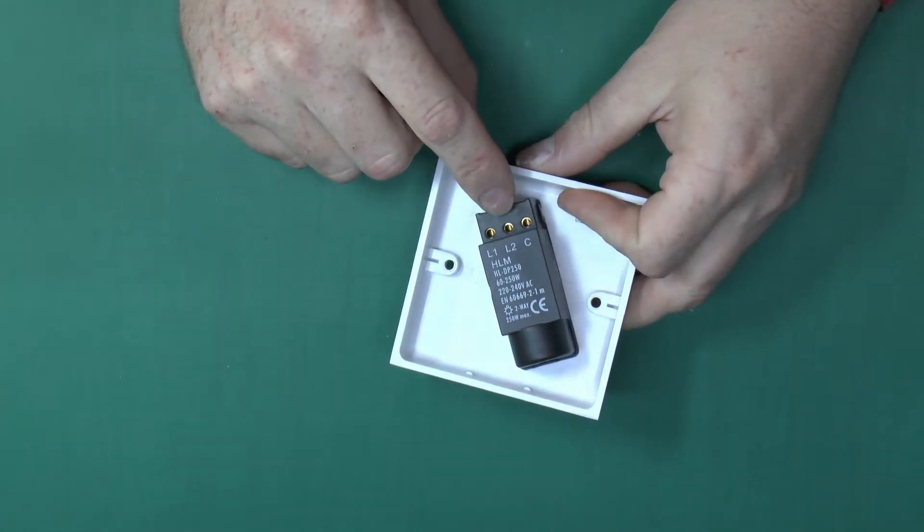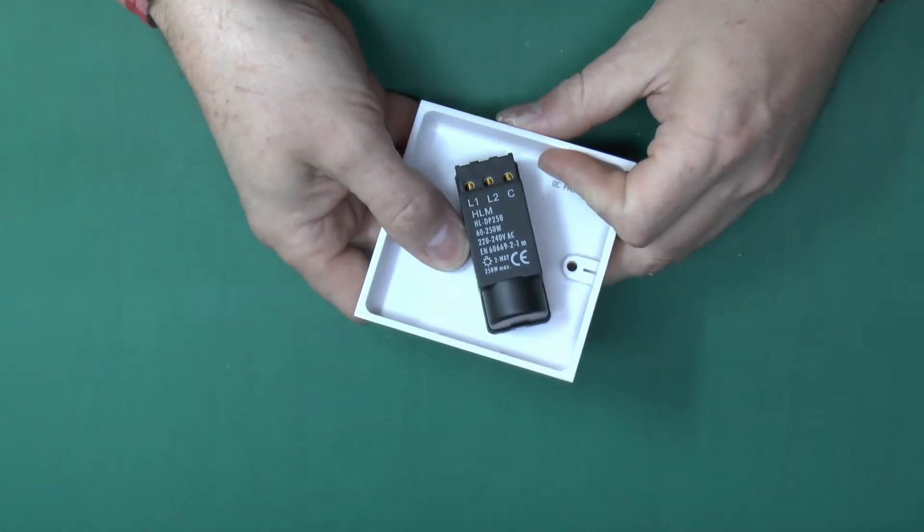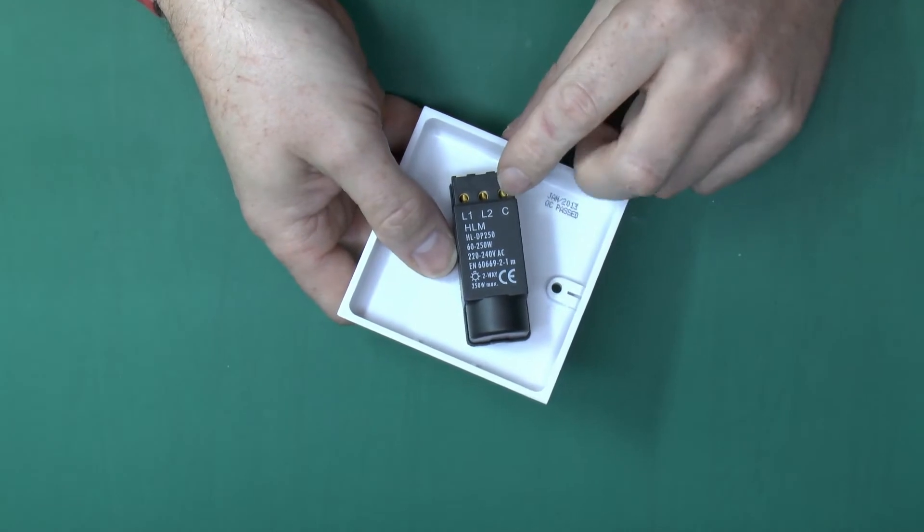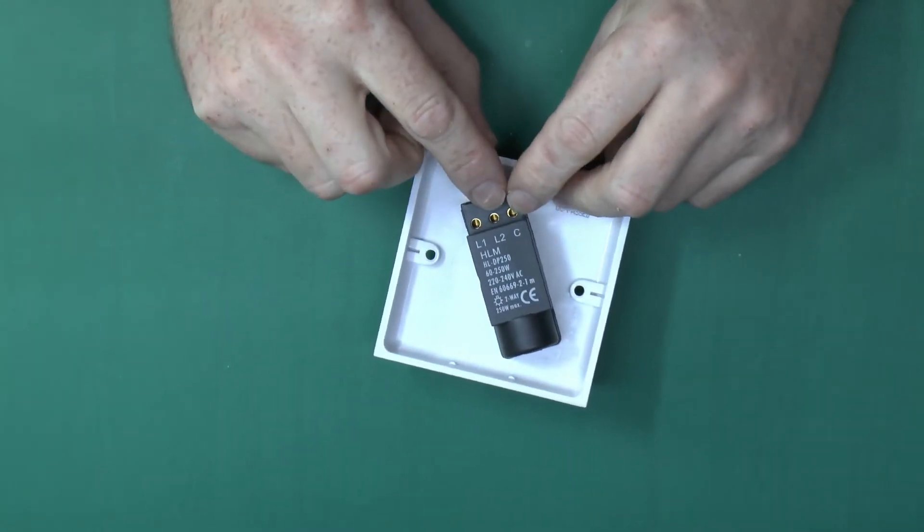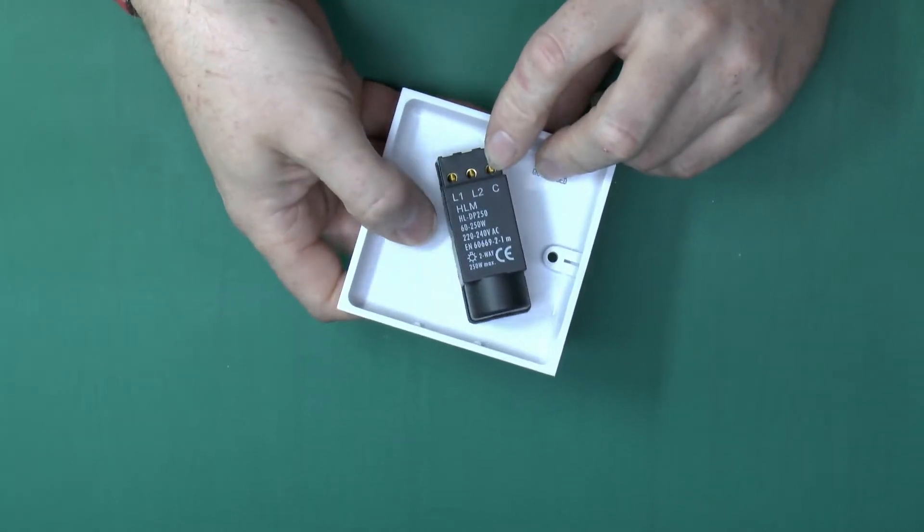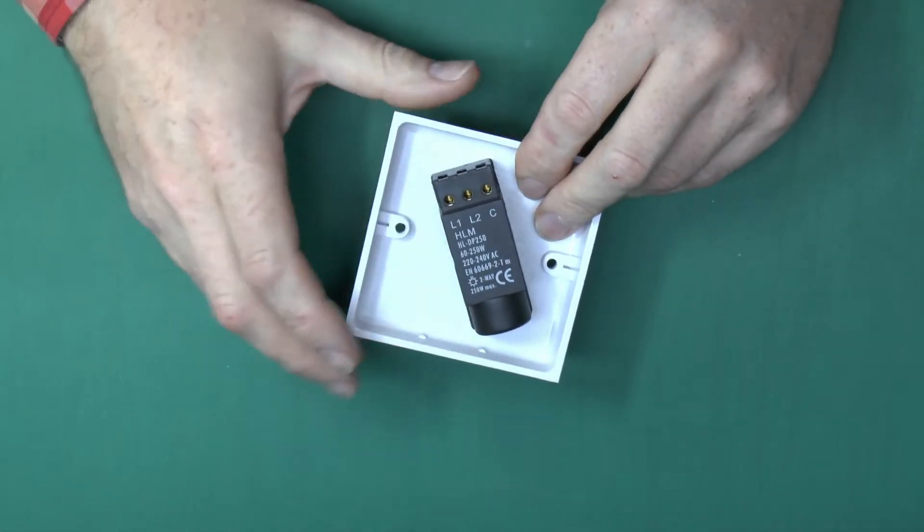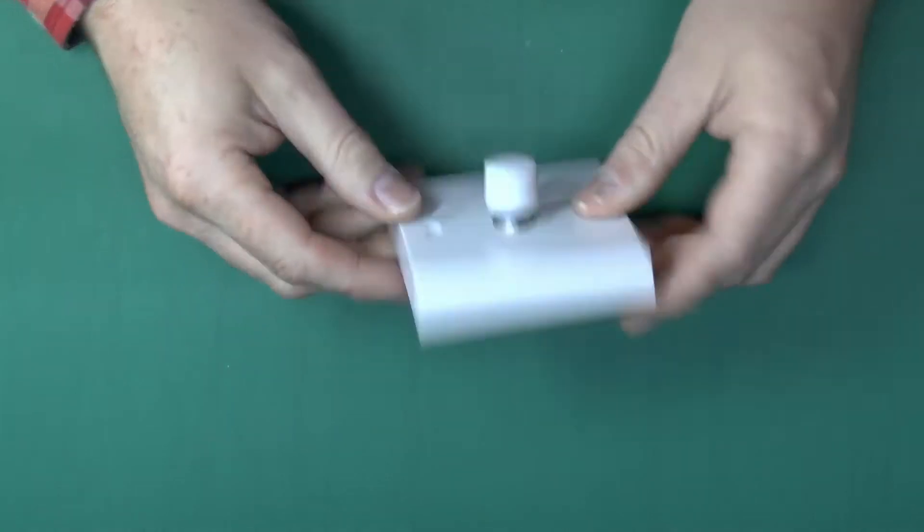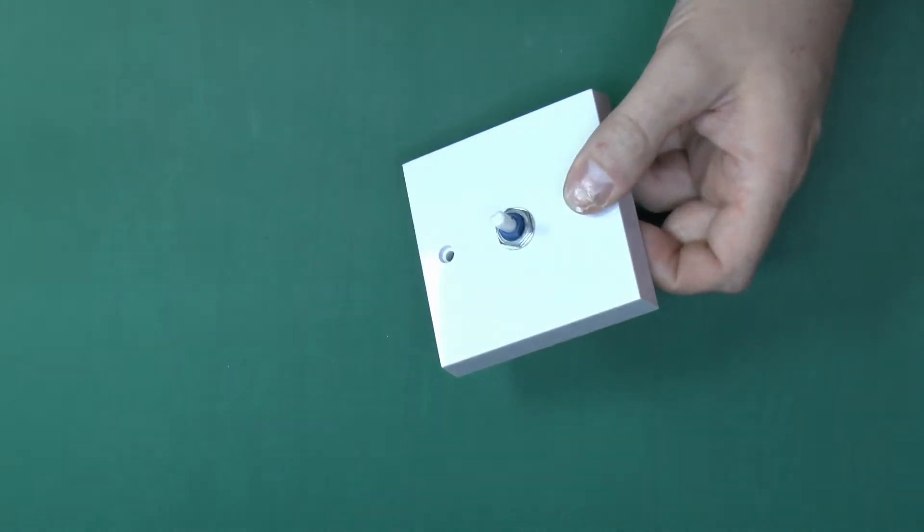It has three terminals on the back, the common and then the two outputs which the switch will switch between. So it's power in there, out on the L1 or L2 depending on the position of the push button, and that's so it can be used with another switch in a property so you can have it controlled from two locations.